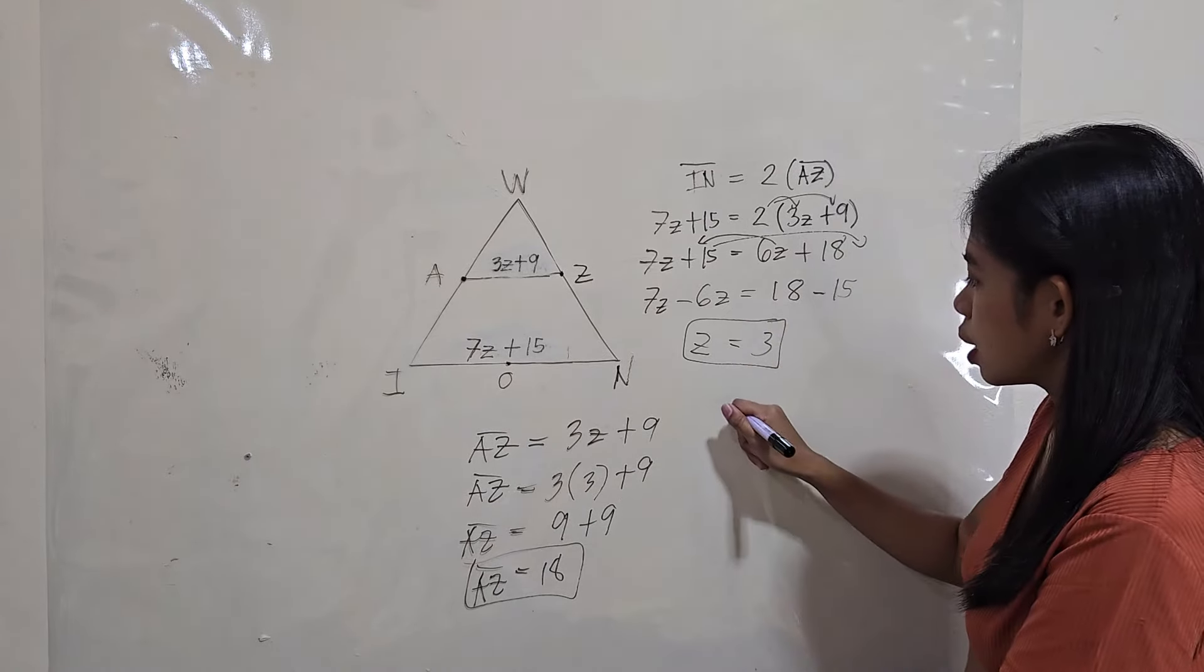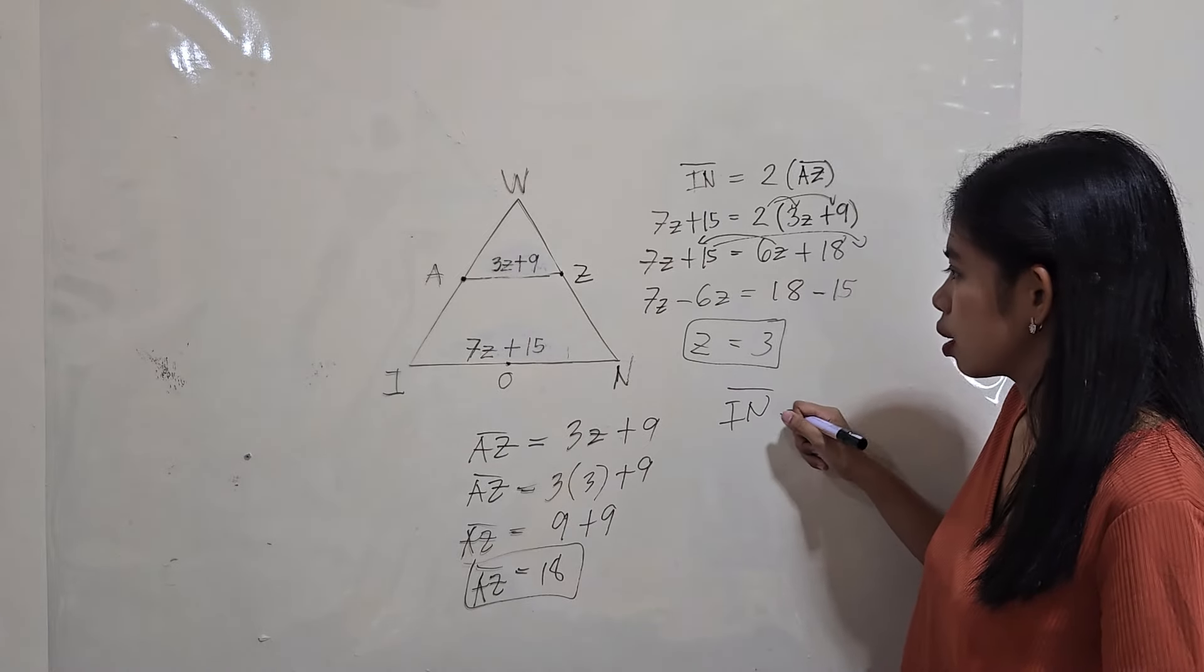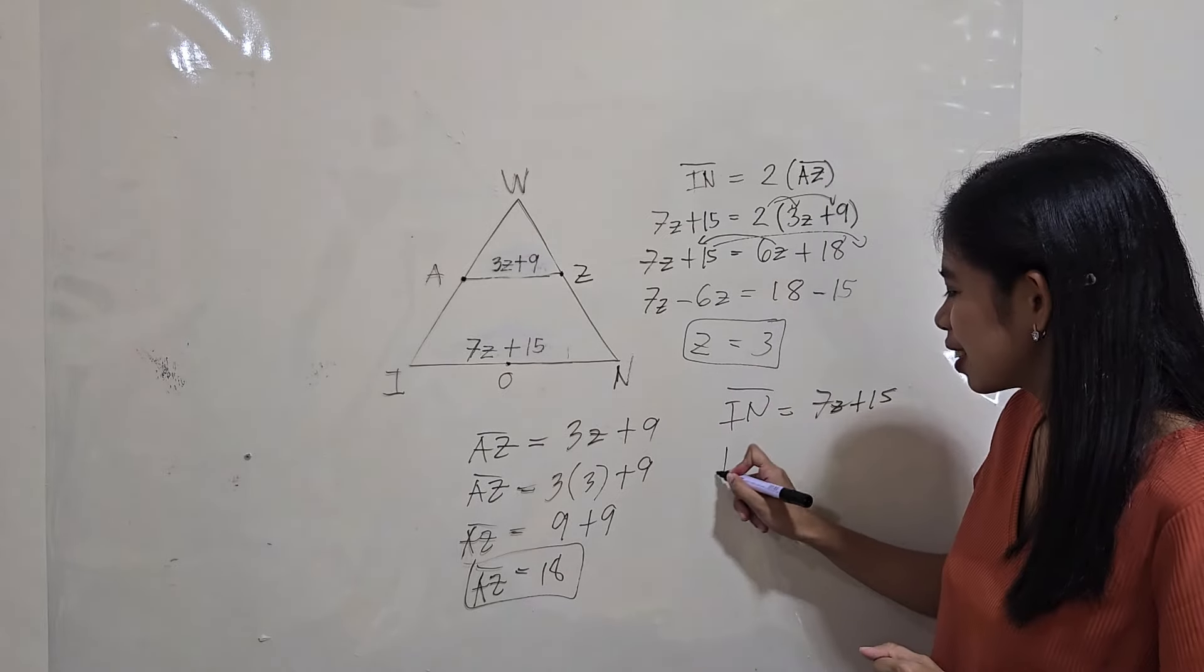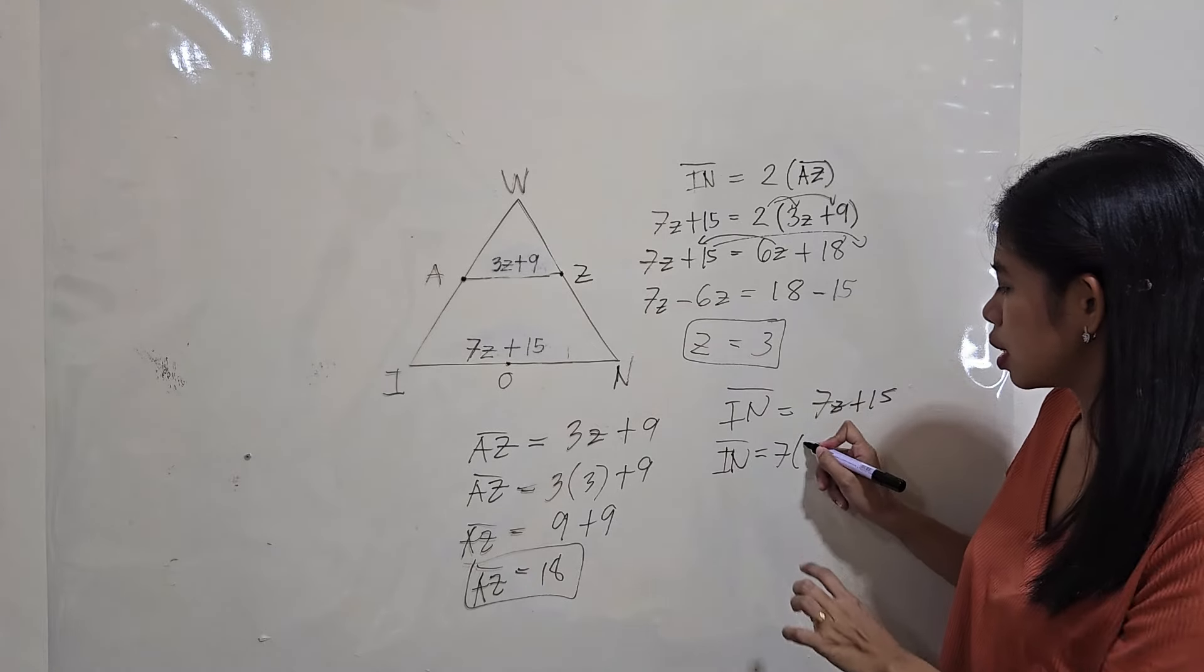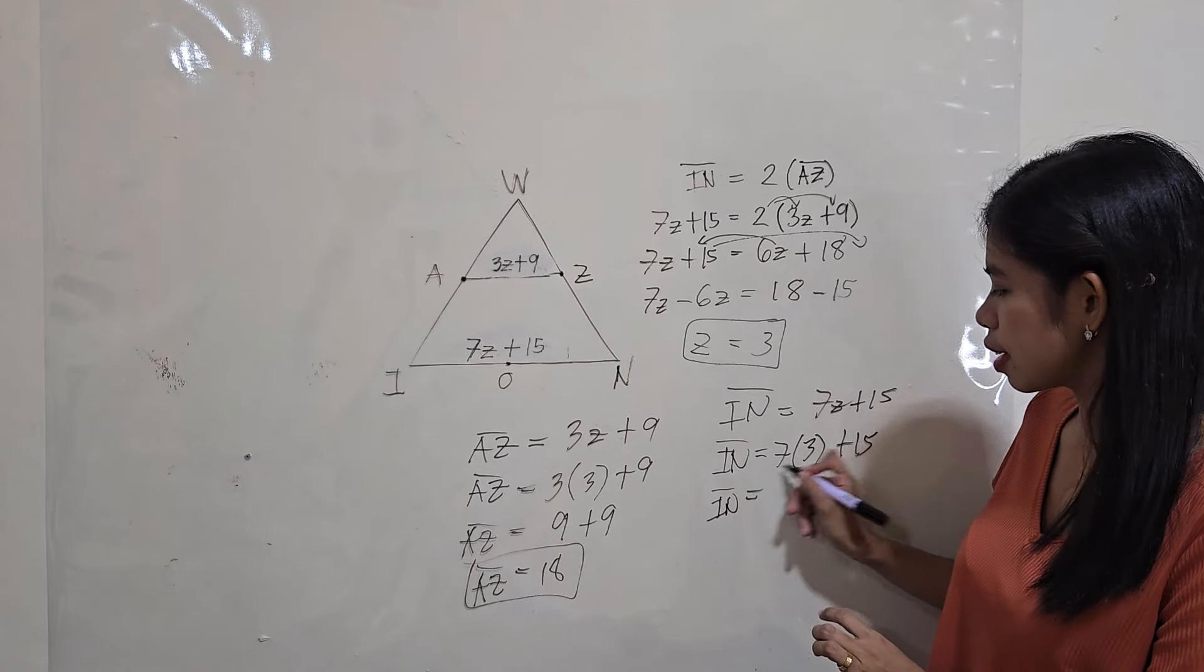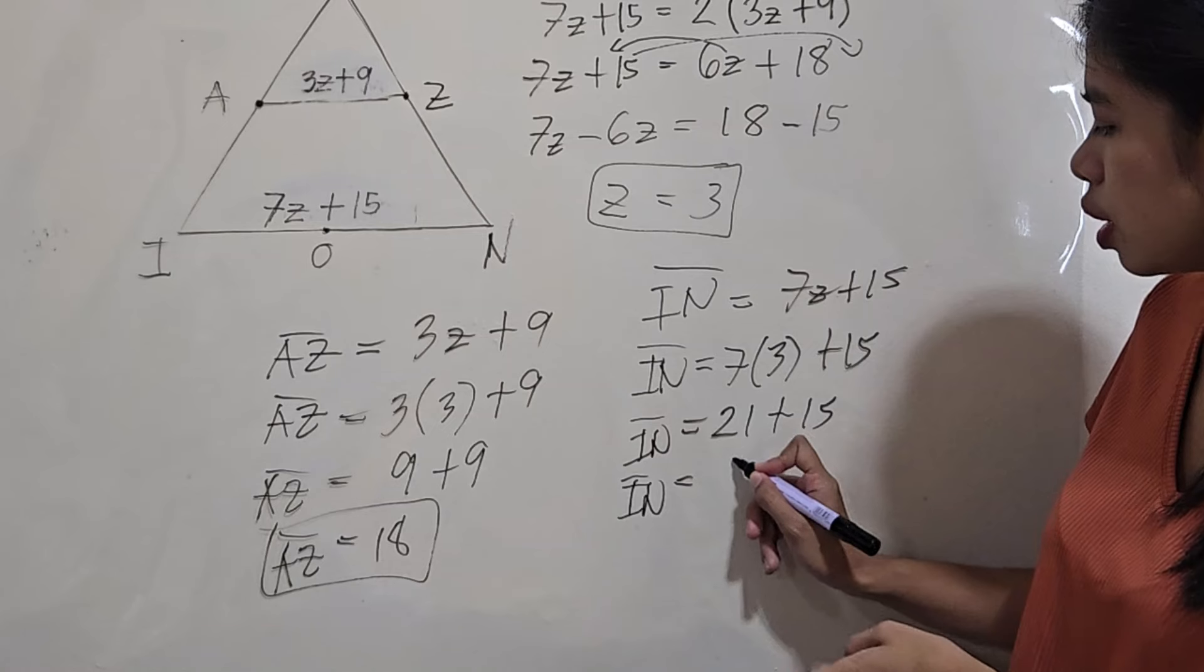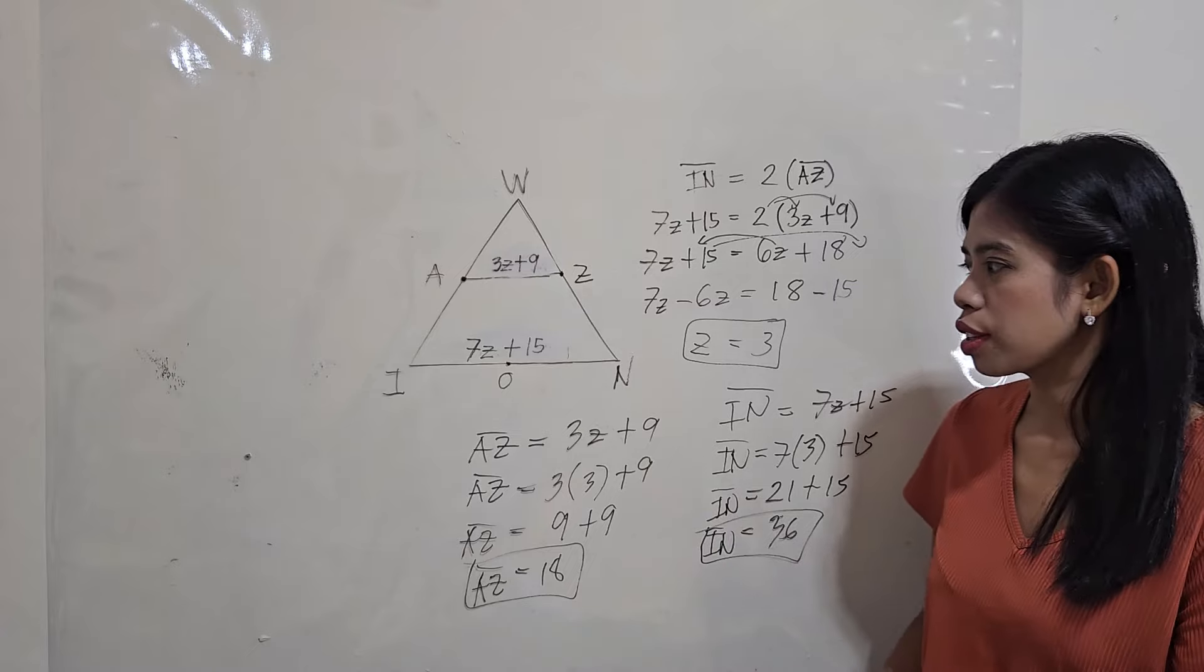But still, let's try to solve. So we know how to check. So, that's 7z + 15. That's IN equals 7 times the measure of z, 3, plus 15. So, that's 7 times 3, 21 plus 15. So, the sum is 21 plus 15. That's 36, double of 18. So, that's 36 units. So, that means our answers are correct.